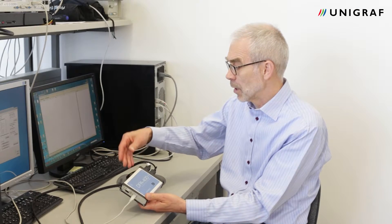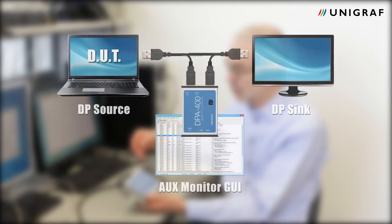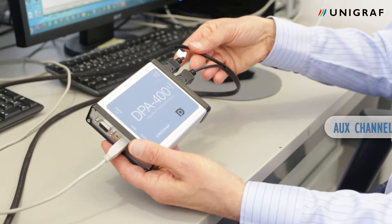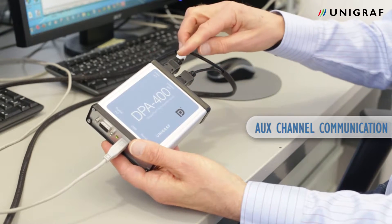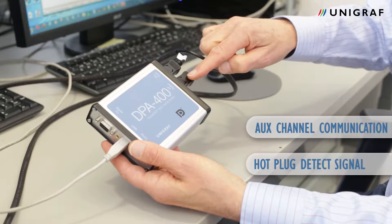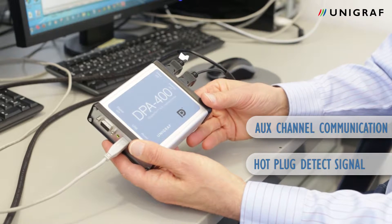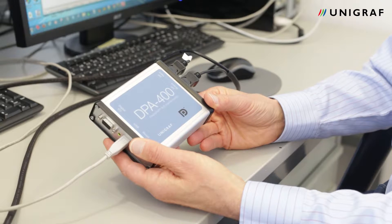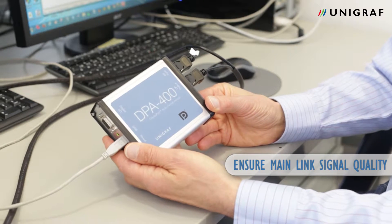DPA400 is connected between a display port sync and a source using a special cable where we feed only the AUG channel and the hot plug dissect signal through the equipment itself. This is for maintaining the quality of the main link signal.